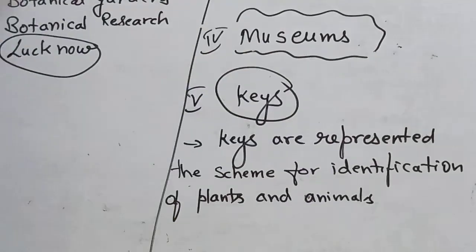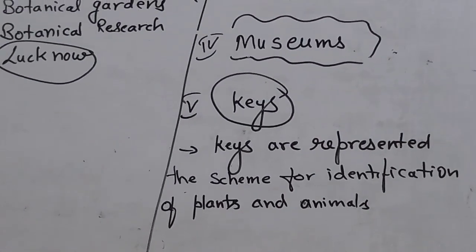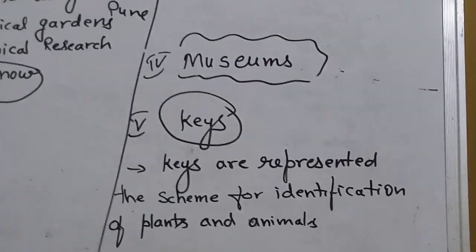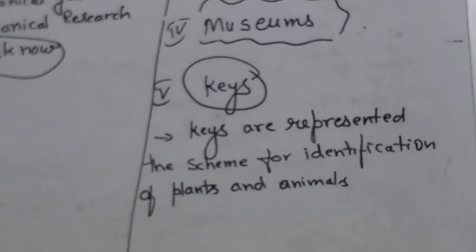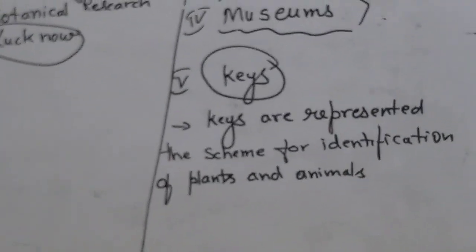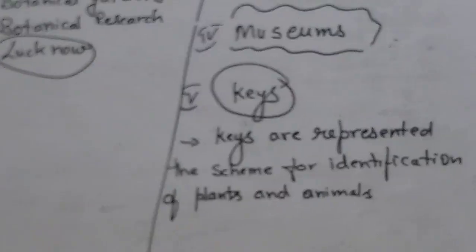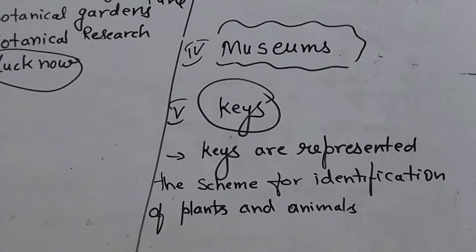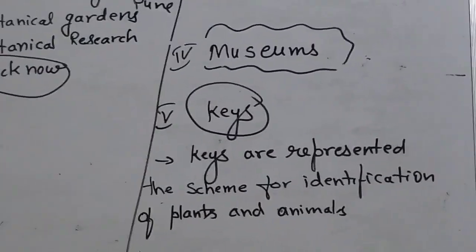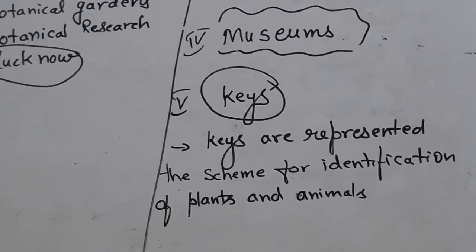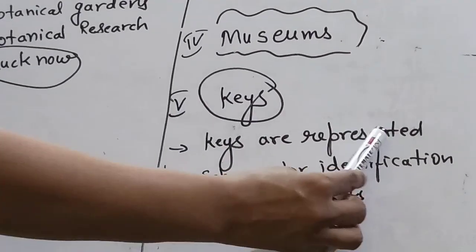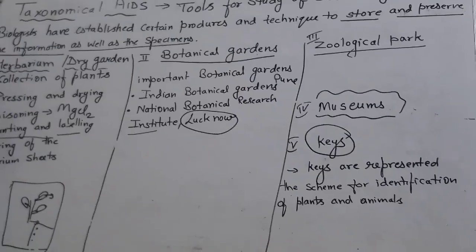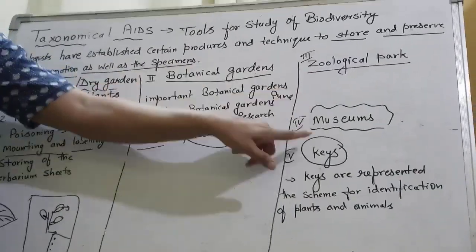Now, this is a key. What is a key? We collect something — say we collect a plant — and we don't know which phylum, class, division, or order it belongs to. There are specific features which are identified and linked to each other. That way we can get a proper identification of features of animals as well as plants. Key means idea — how we get the idea is by clues, by identification. Keys represent a scheme for identification of plants and animals.